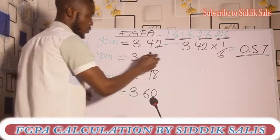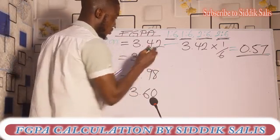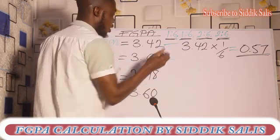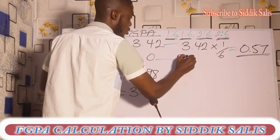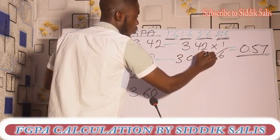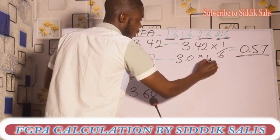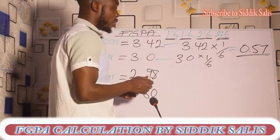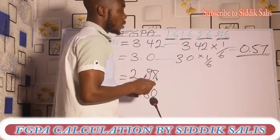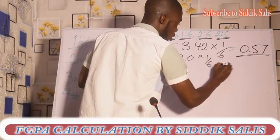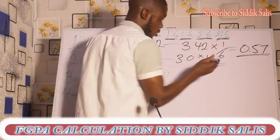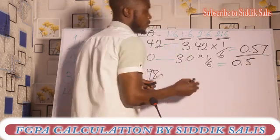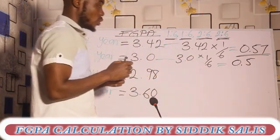Now for the second year, we have 3.0 times one divided by six. And what does that give us? That gives us 0.5. So we have 0.5 for the second year. Let's keep going.